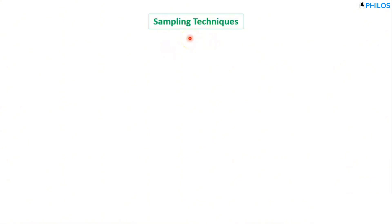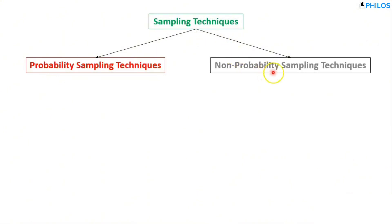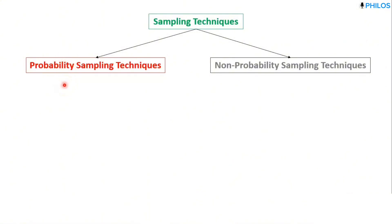Now let's look at the main thing: sampling techniques. We have two sampling techniques. The first is called the probability sampling technique, also known as random sampling. The second is the non-probability sampling technique, also called non-random sampling. For probability or random sampling, it ensures that every member of the population has an equal chance of being selected — the keyword is chance.